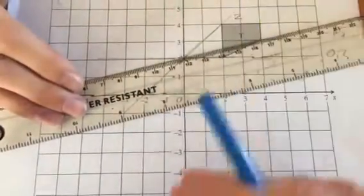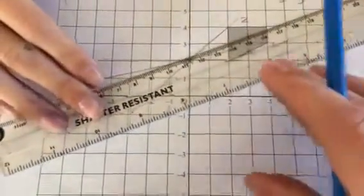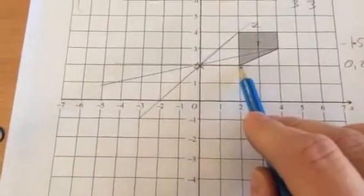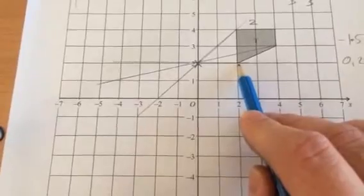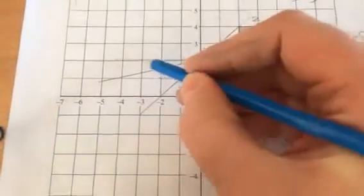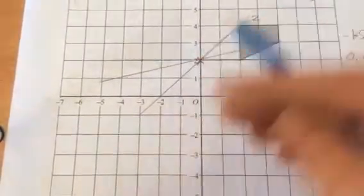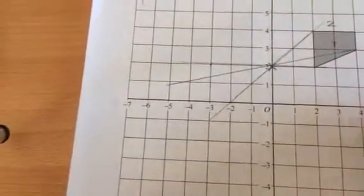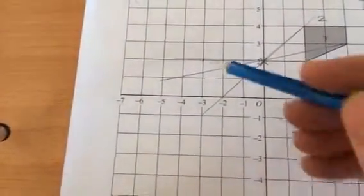We could also use counting. If it is 2 away there, the new shape would be 3 away. So the new shape would start along this line. So our new shape is going to start over there.